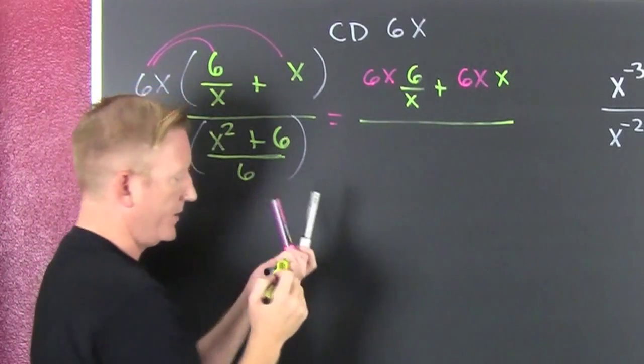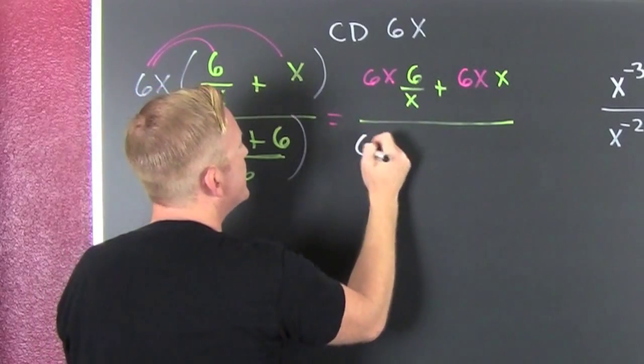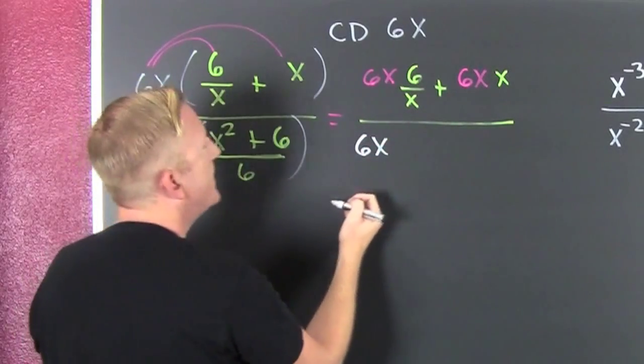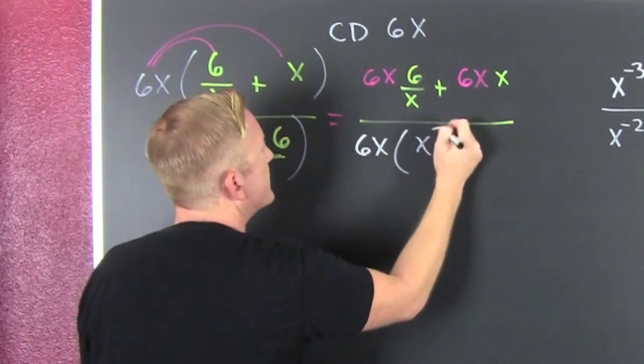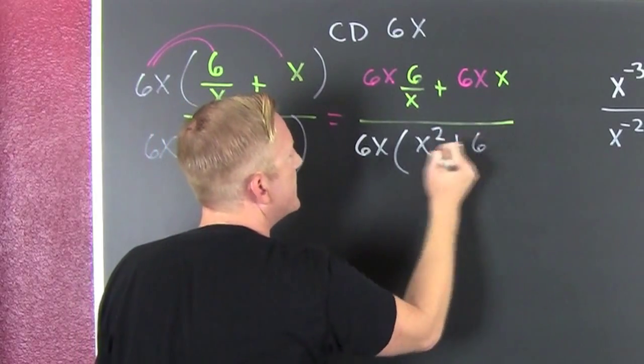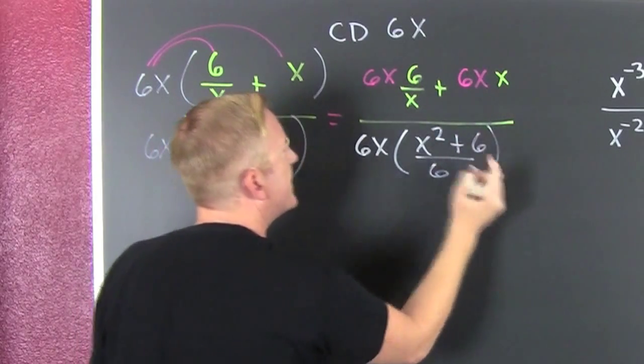Leave it alone? Yeah, sure. Don't touch it. Leave it alone. 6x. Oh, that worked. Times an x squared plus 6. All over 6.